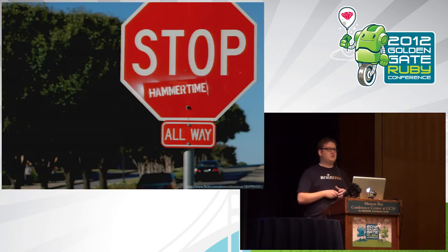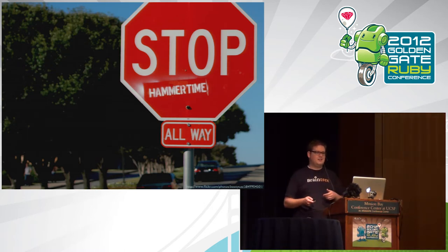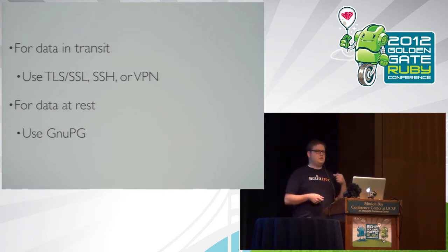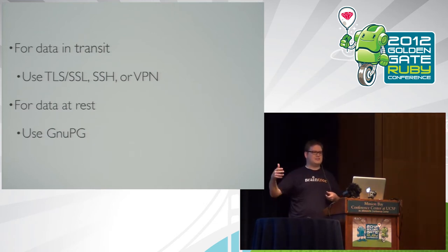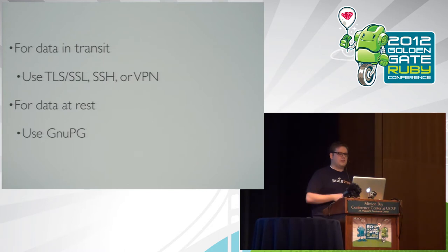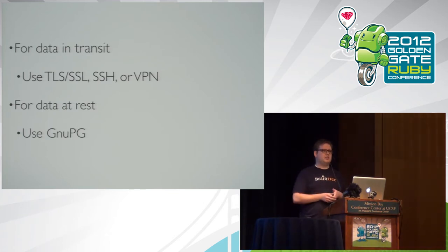In general, you should approach any time you're going to deal with cryptography in your systems and applications with a really healthy dose of skepticism. Crypto is very difficult to verify and test, and unfortunately even the experts screw it up most of the time. Good prescriptive advice: if you have data in transit over a network, use TLS/SSL, which stands for Transport Layer Security, or SSH or VPN. If your data is at rest — sitting on disk, in Dropbox, or S3 — use GPG. If it doesn't fit one of these two models, try to rework it until it does.